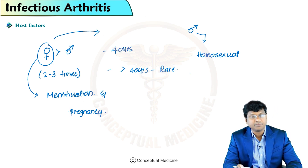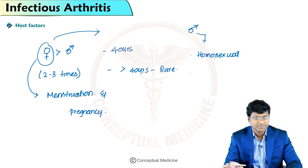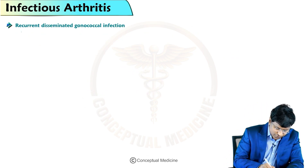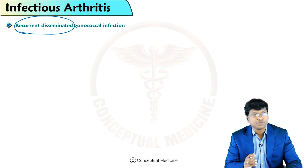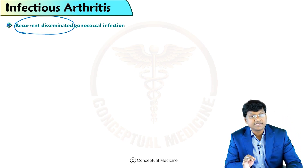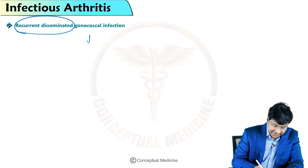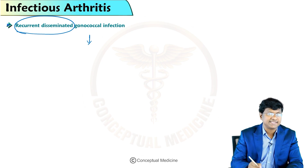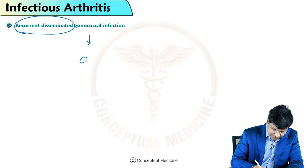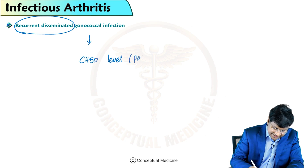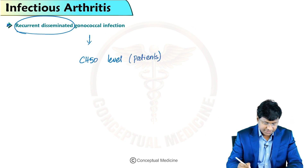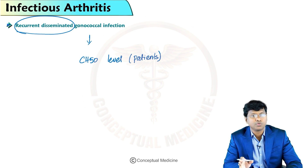Gonococcal arthritis is also seen in men who have intercourse with men — these are the host factors that predispose to gonococcal infection. If there is recurrent disseminated gonococcal infection, that should prompt you to test the patient for CH50 level.